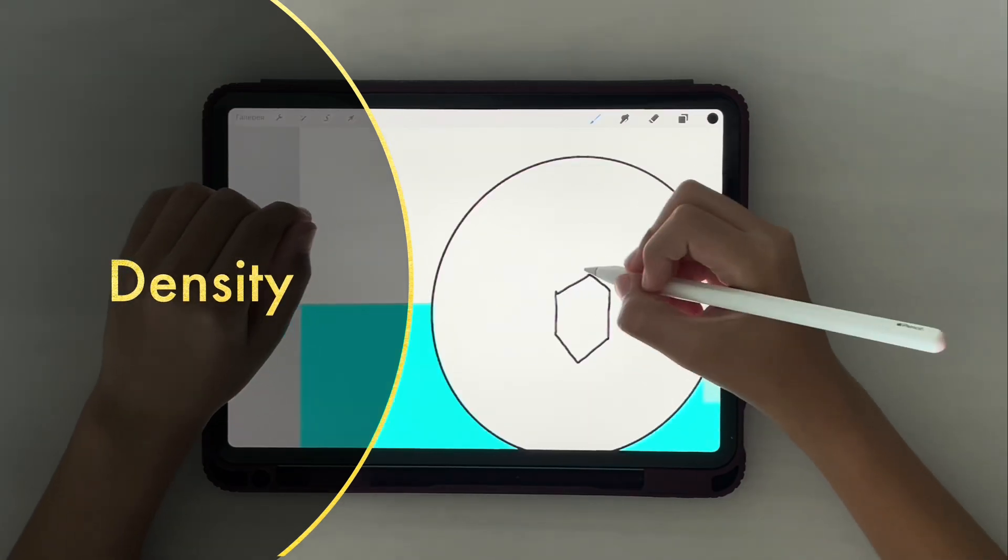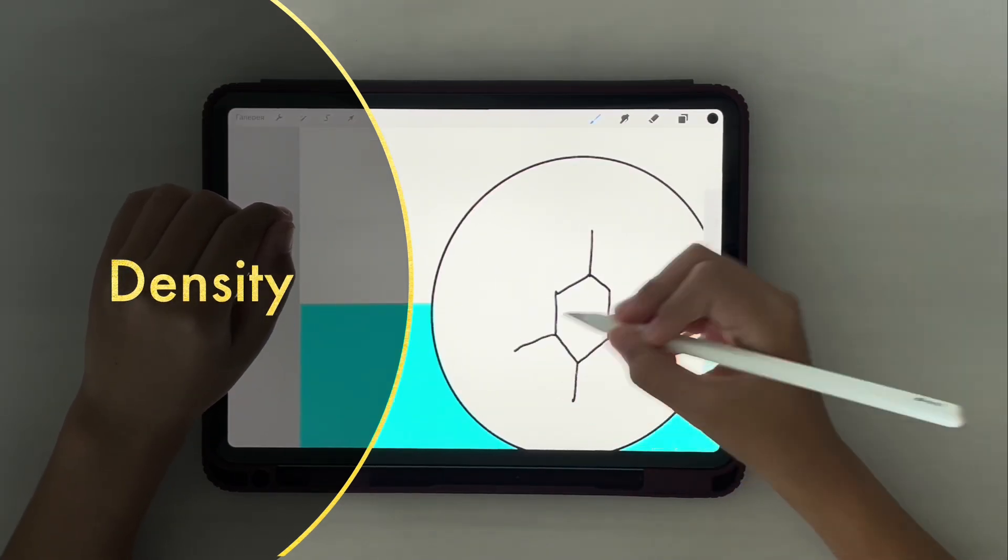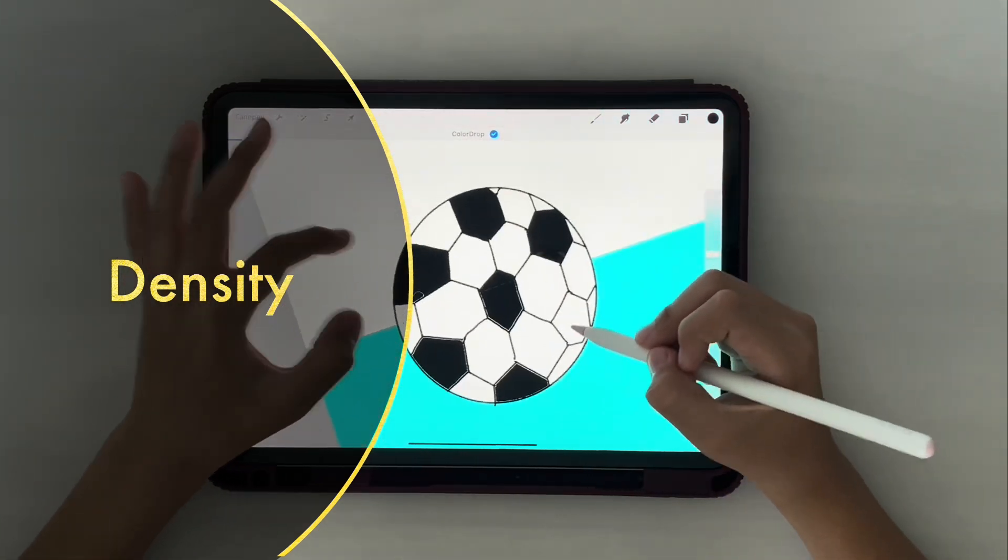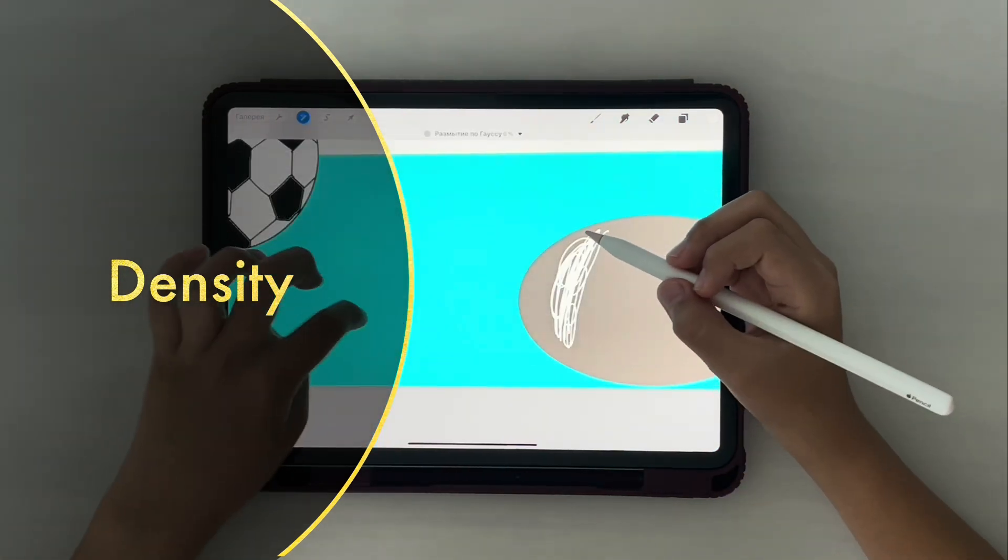Objects float or sink in water due to their density. Objects that are denser than water, for example a stone, sink, and those that are less dense float, for example a bottle or a bubble of soap.